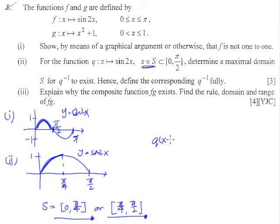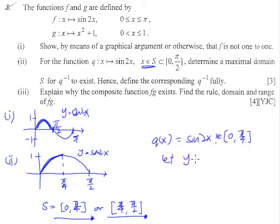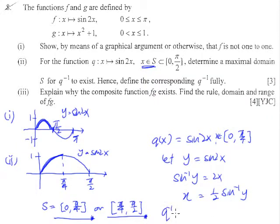Let's figure this out. qx = sin(2x) for the domain 0 to pi over 4. To define the inverse, we let y = sin(2x). Therefore sin-inverse of y equals 2x, so x = (1/2) sin-inverse(y). Therefore q-inverse(x) = (1/2) sin-inverse(x). The domain of q-inverse is the range of q, and the range is from 0 to 1, so the domain of q-inverse is also 0 to 1.